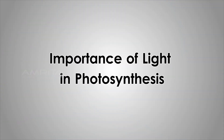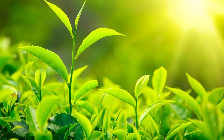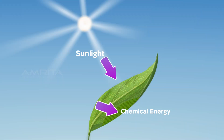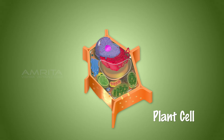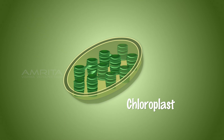Photosynthesis is the process of converting light energy from the sun into chemical energy through a complex biochemical reaction. The process of photosynthesis takes place in the chloroplast, specifically in chlorophyll, the green pigment involved in photosynthesis.